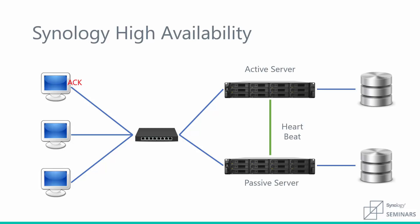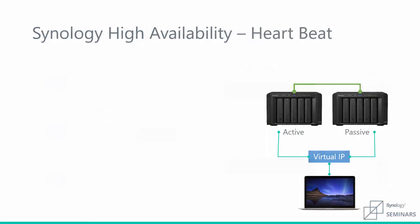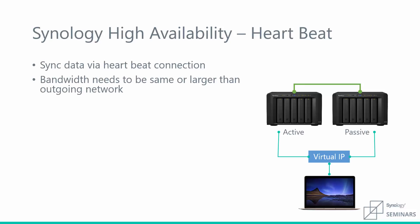The heartbeat connection is critical to performance. In this diagram it's represented by the green line — the connection between those two servers — and this is how we're keeping data synced between the two devices. An important consideration is that the speed or bandwidth of that heartbeat connection needs to be the same or larger than the speed of your network. For example, if you have 10 gig in your environment, that heartbeat needs to be 10 gig at a minimum. Or if you have a gigabit connection, implementing 10 gig is still a great way to make sure you don't have any performance issues.